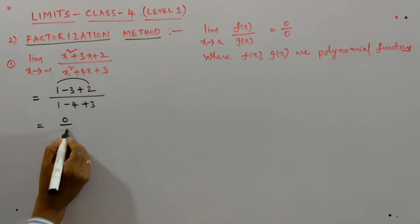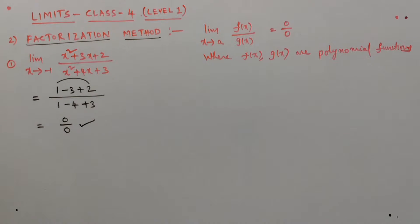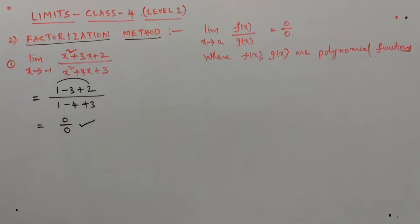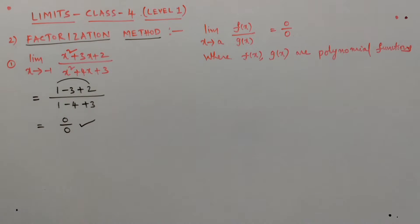What we are getting? 0 by 0. 0 by 0 is called indeterminate form. So the limit of this function gives an indeterminate form — we cannot say the limit like that. We need to find another suitable method. That is the factorization method. We tried to calculate the limit by direct substitution method and got an indeterminate form, so we will calculate the limit by factorization method.